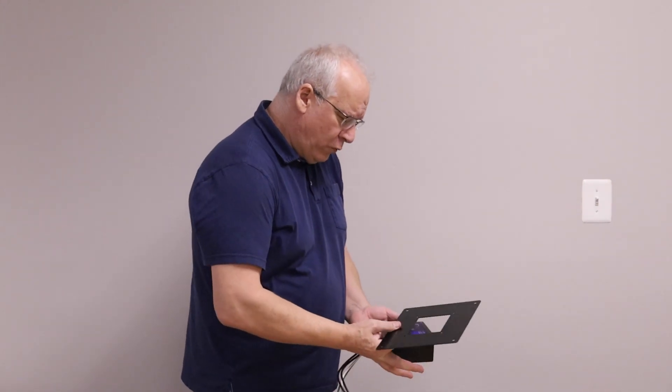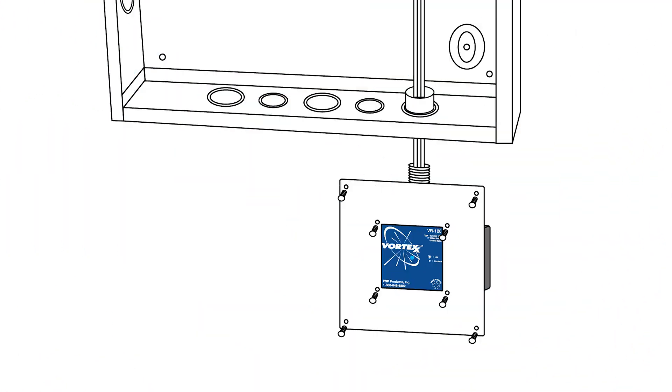So for that we have developed an optional flush mount cover. The flush mount cover secures to the front of the surge protector using the same screws that hold the cover onto the SPD.